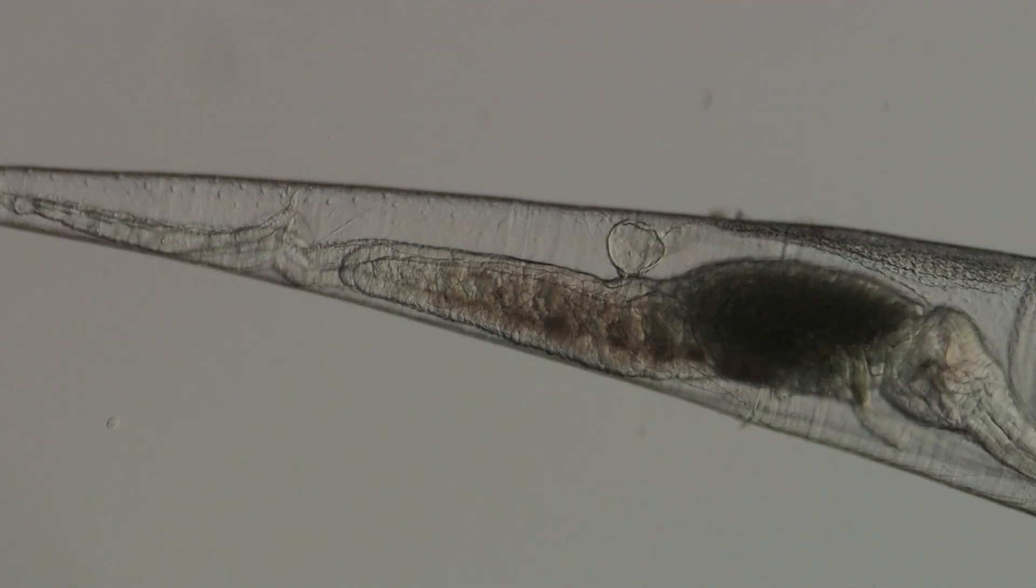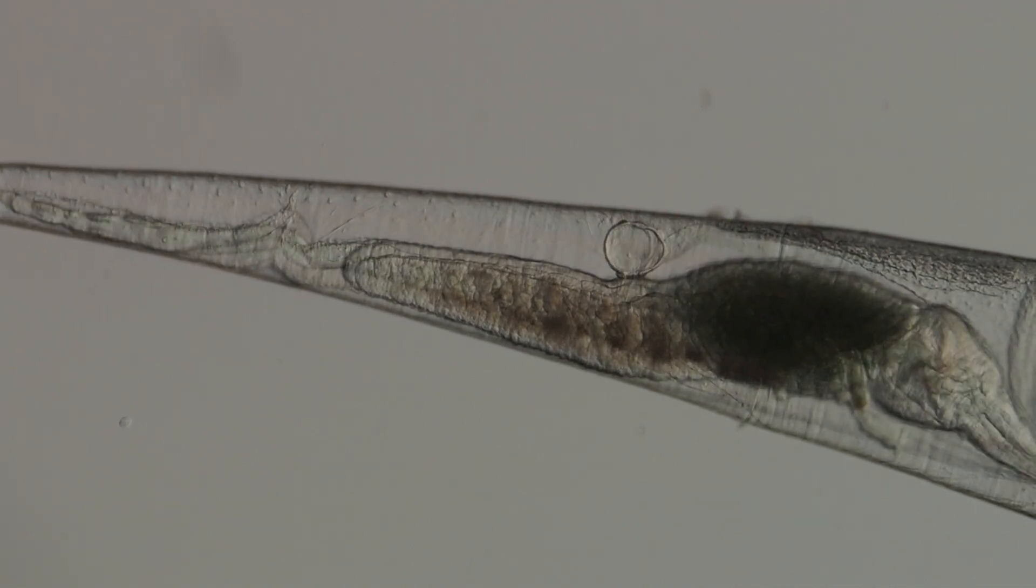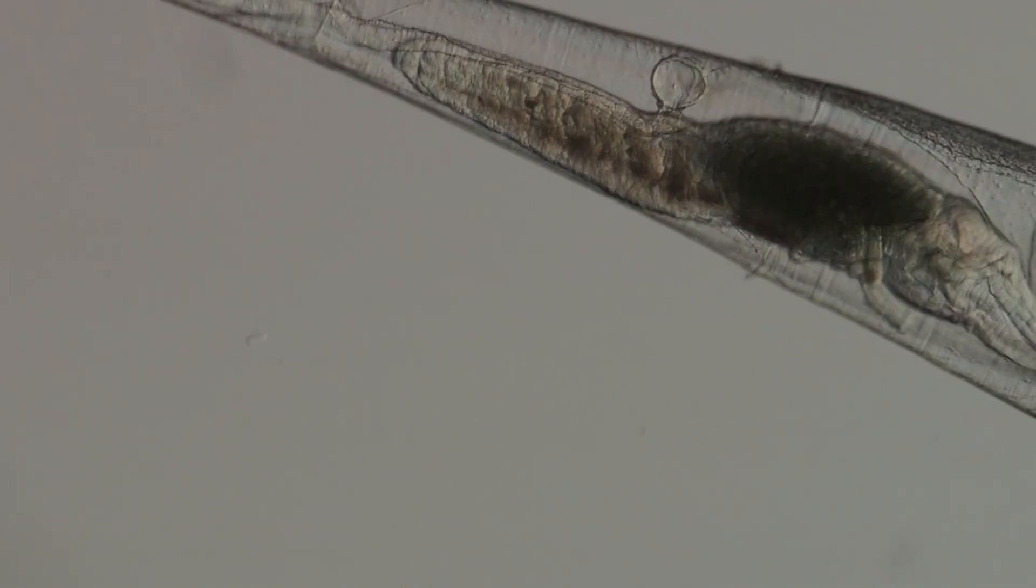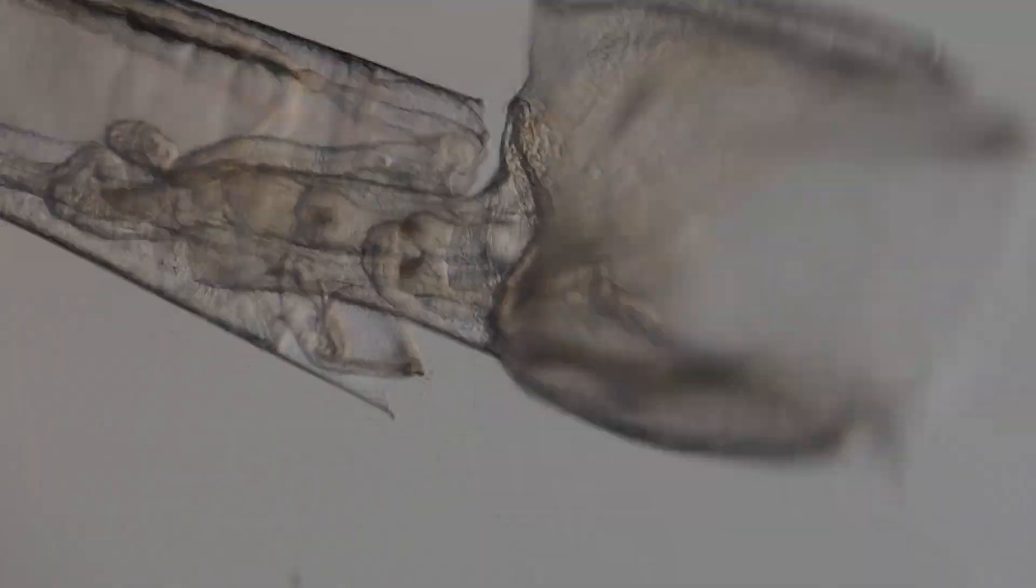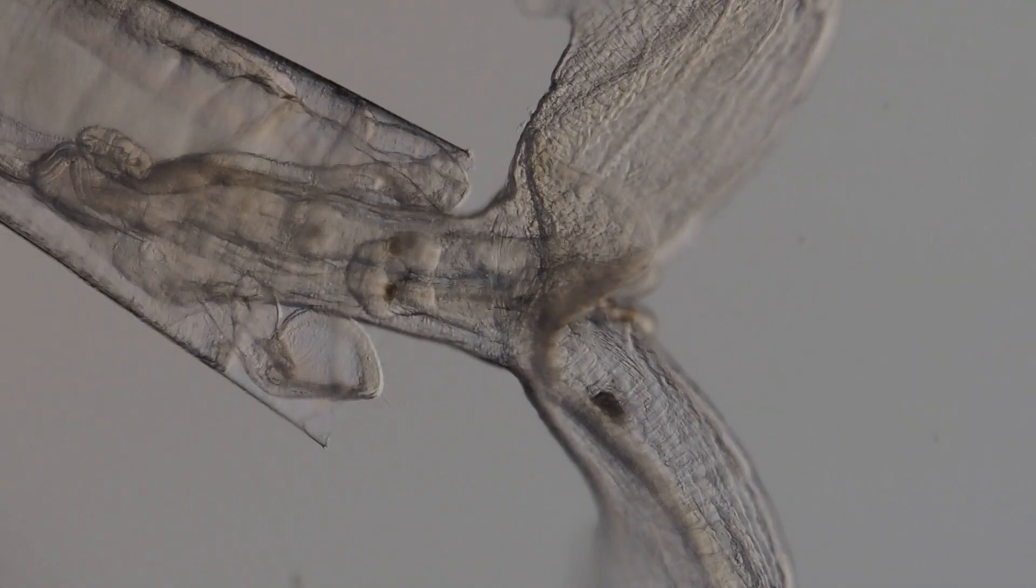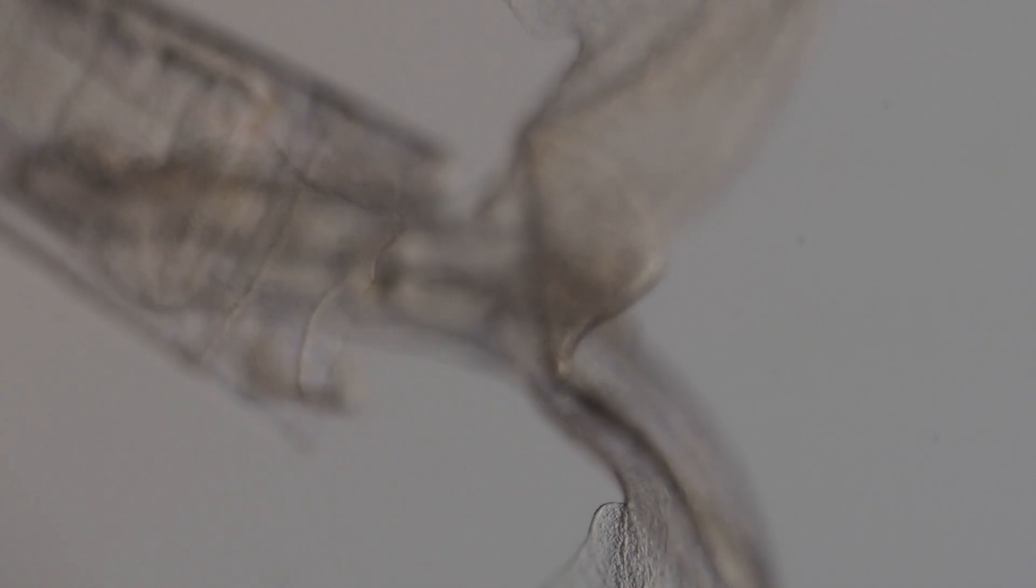Pteropods play a huge role in the zooplankton community by being important consumers. They catch food by extending a mucus net into the water and eating whatever gets trapped in it.